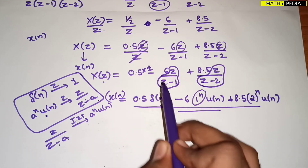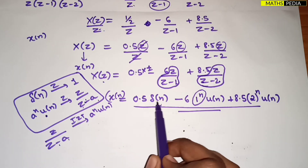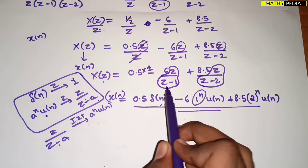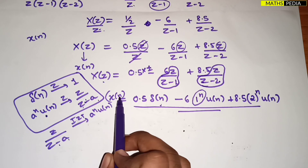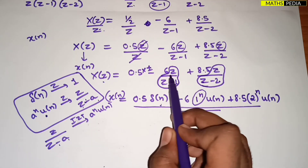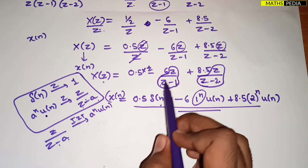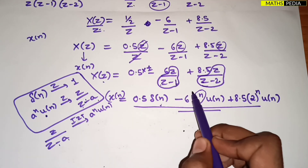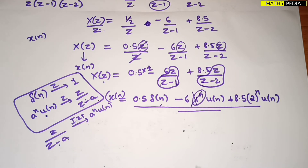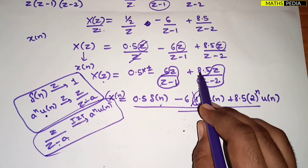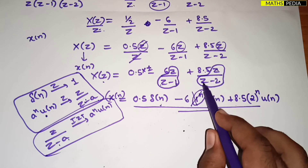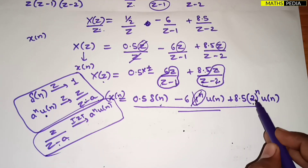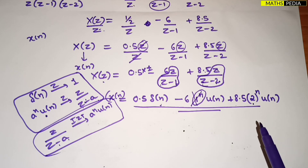So this is x(n). To summarize: whenever you get a constant term, write it as that constant times δ(n). For z/(z − a) terms, compare the value of a: the constant multiplier stays as is, a^n·u(n) is the result. Here −6 is the multiplier with a = 1, giving −6·u(n), and 8.5 with a = 2 gives 8.5·(2)^n·u(n). This is how you find the inverse z-transform.